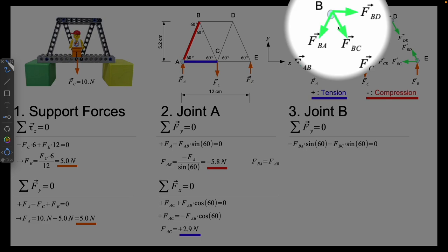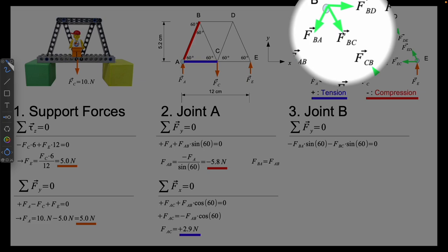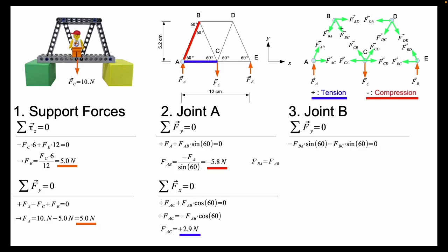So up here I get minus the force BA times sine of the angle 60 minus the force BC sine 60 must be equal to zero. And I can solve for the force on B by C which I get plus 5.8 newtons.